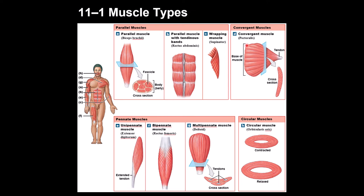The second type is called a convergent muscle, where muscle fibers start from a broad area and converge to the tendon in a small area. An example is the pectoralis muscle in the chest. Another classification is called pennate muscle, where the muscle fibers run oblique to the tendon.